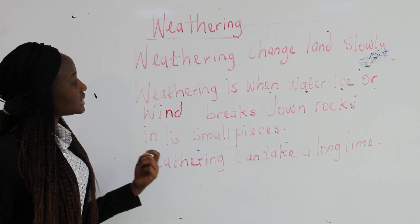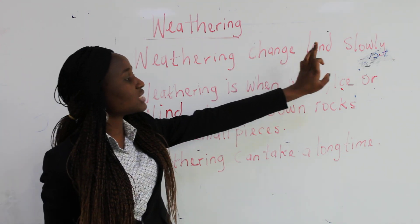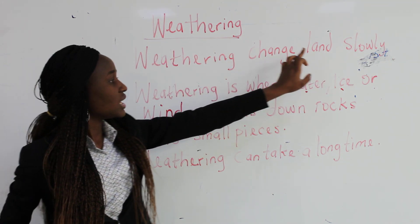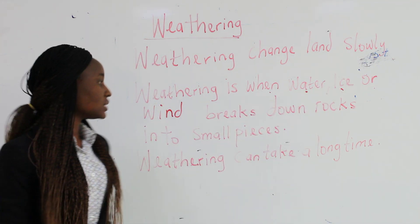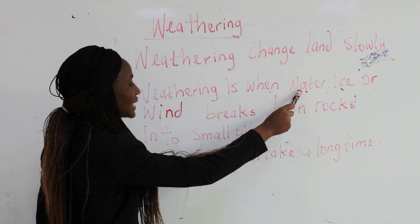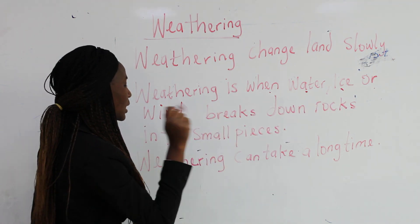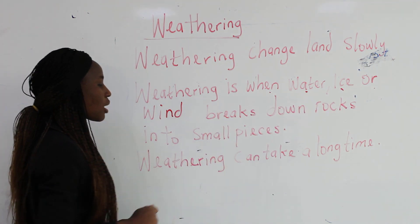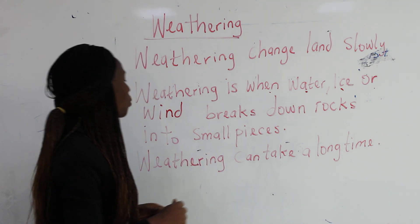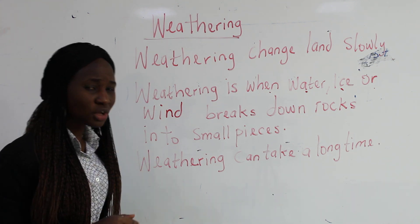Weathering is part of the slow changes that happen to the Earth. Weathering changes land slowly. Weathering is when water, ice, or wind breaks down rocks into small pieces.